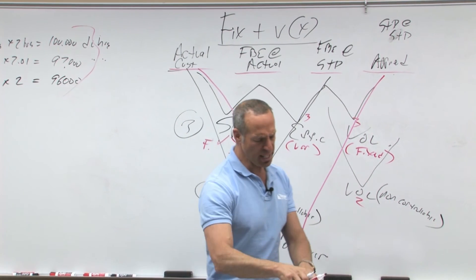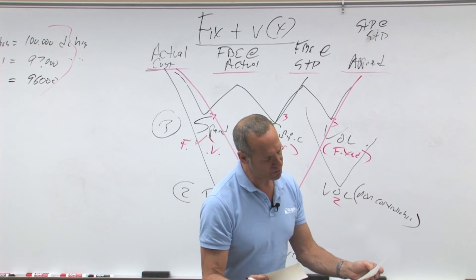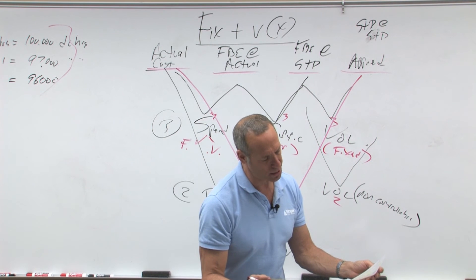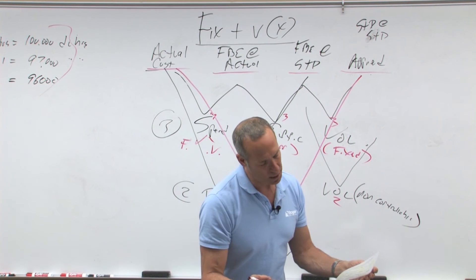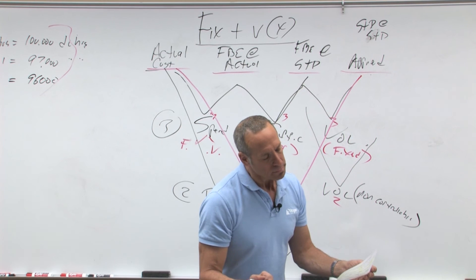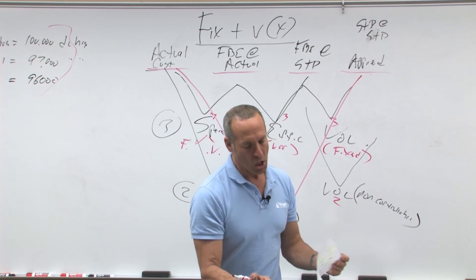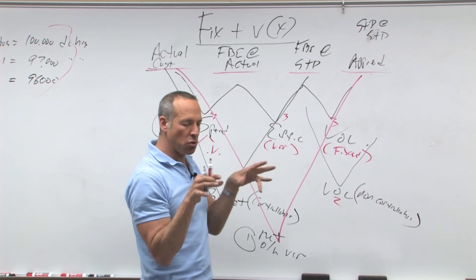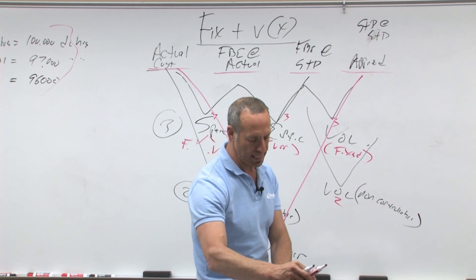You'll see a picture similar to that in your notes around page five, six, or seven — that big box showing actual overhead, flexible budget, flexible budget at standard, and applied. That's how we get all the differences and how they are all interrelated.